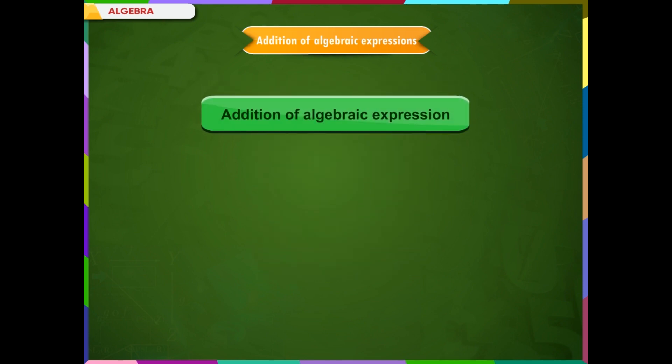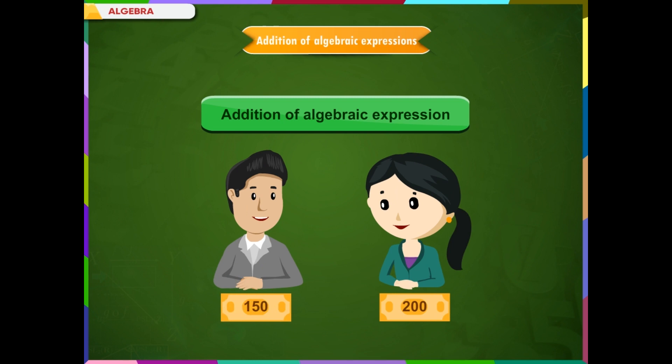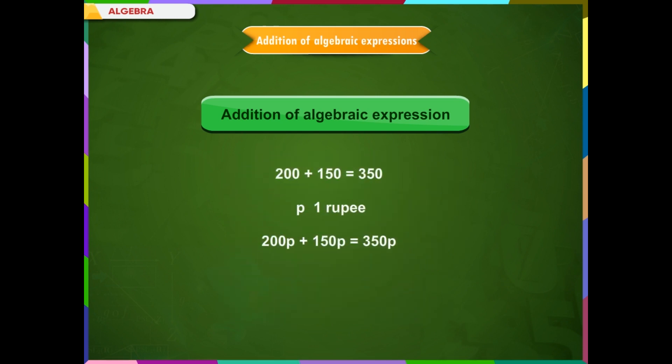Suppose Meena has 200 rupees and Raju has 150 rupees. How much rupees do they have altogether? They have 200 + 150 = 350 rupees. If p represents 1 rupee, then this statement can be written as 200p + 150p = 350p.